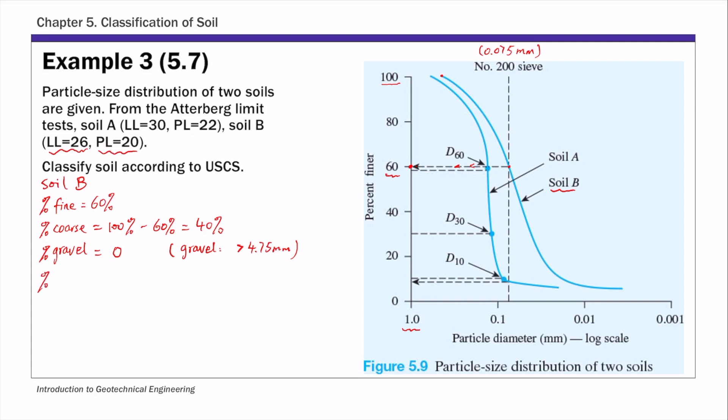And then the percent of sand is percent of coarse minus percent of gravel. So that's 40%, so that's the percentage of different particles in this soil.